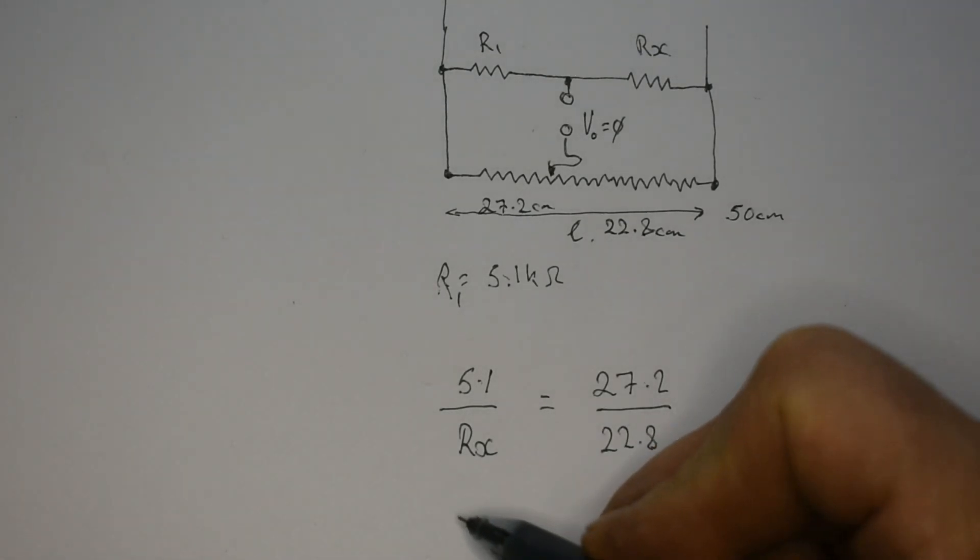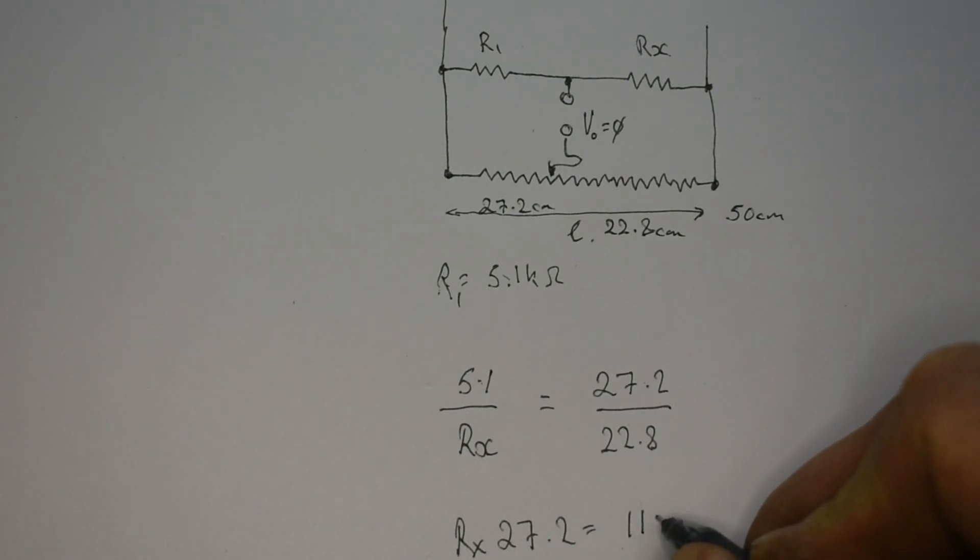5.1 over Rx is equal to 27.2 over 22.8. And we can cross multiply that out, which would give us Rx times 27.2 is equal to 116.28. And that gives us a value for Rx as 4.275k ohms.